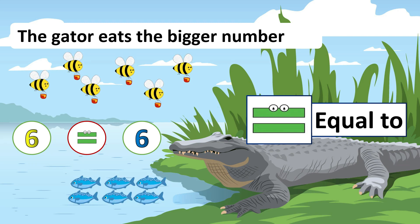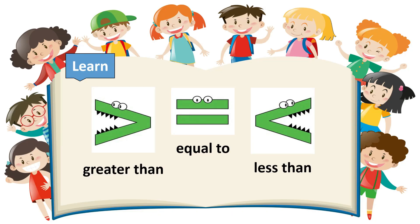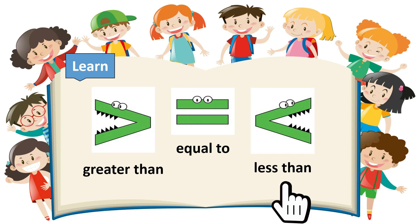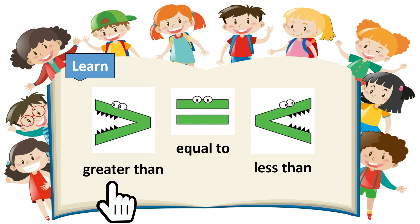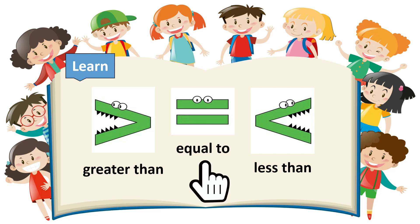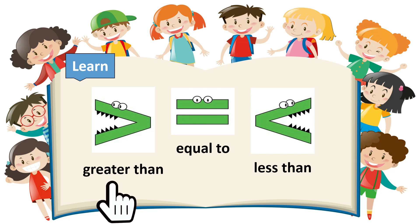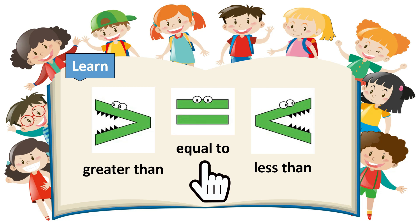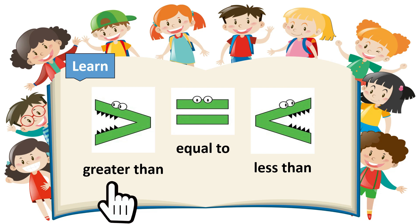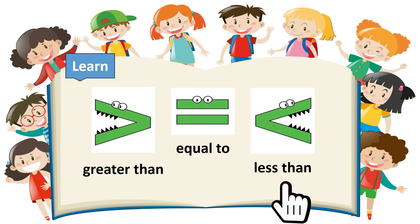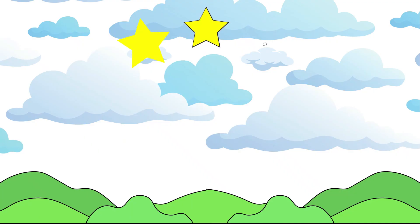Can you say it aloud? Great job! And now, don't forget these symbols: greater than, equal to, less than. Greater than, equal to, less than. Can you say it aloud? Let's say it together! Greater than, equal to, less than. You did a great job!